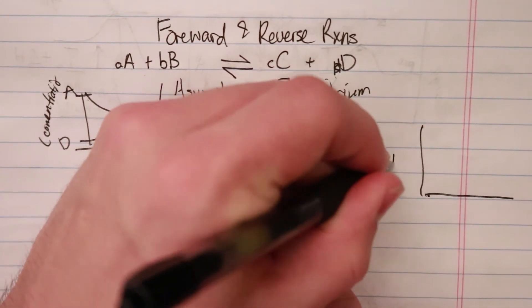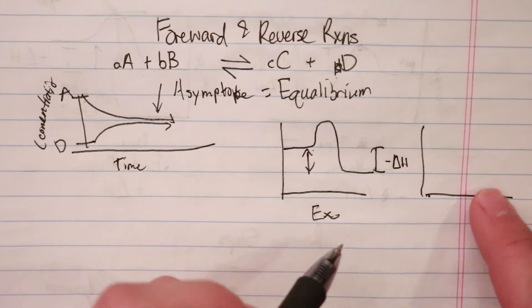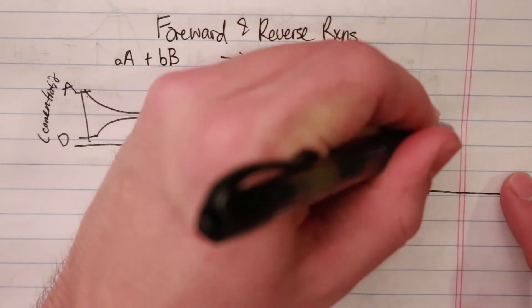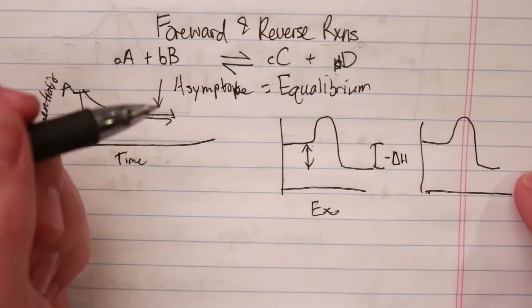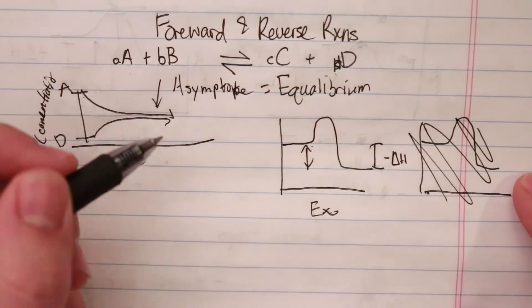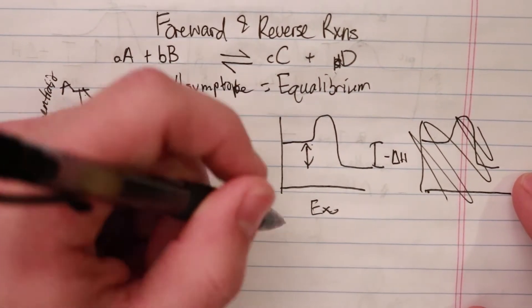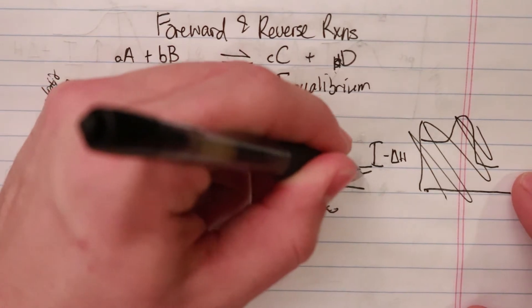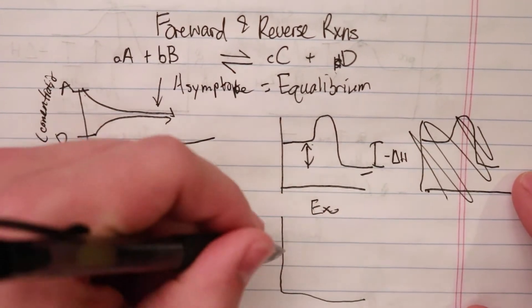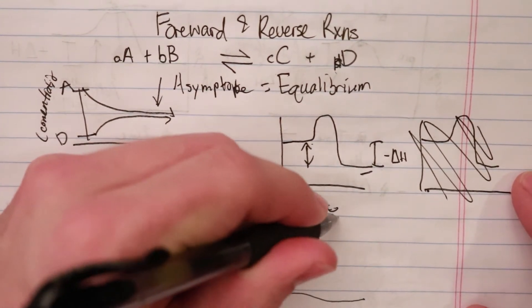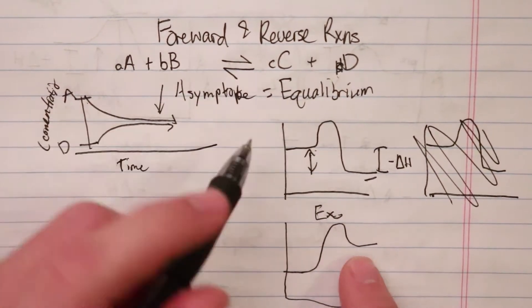But if I were to draw this backwards, or I went this way, I would start low, go up to two, and finish like this. So see how this is the reverse.